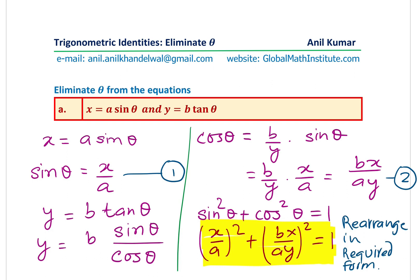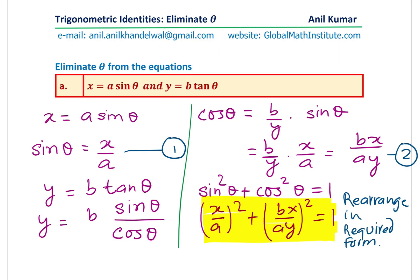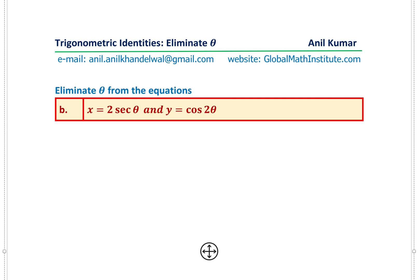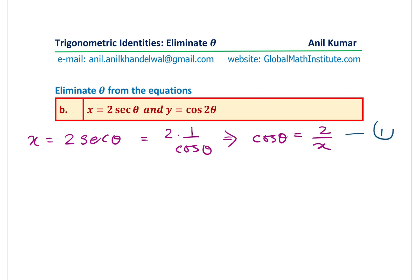So that is how you should be doing it. Now, let's take the next example, which is x = 2 secant theta and y is equals to cosine 2 theta. So let's again begin with what is given to us as x equals 2 secant theta. Now secant theta, as you know, is one over cos theta. So from here, you can say cos theta is equal to what? Just cross multiply, you get 2 over x. So that becomes our first equation.